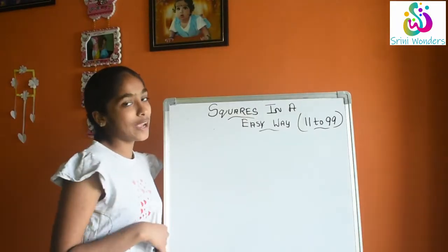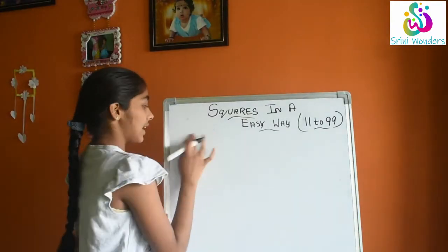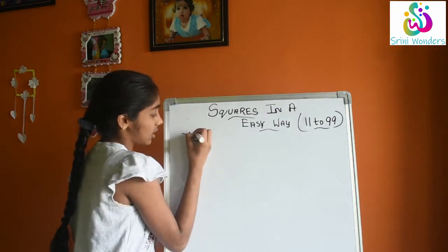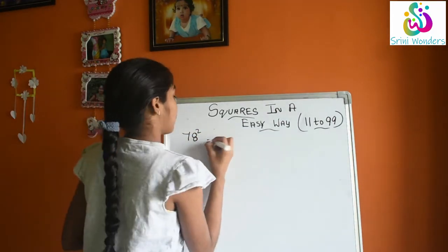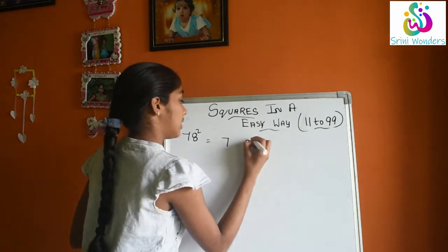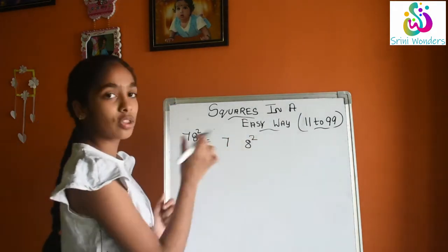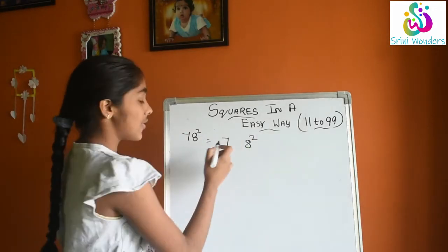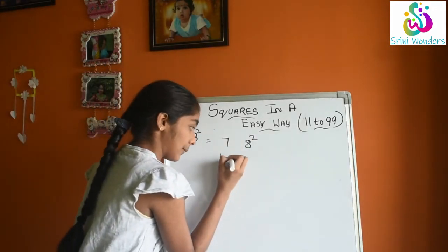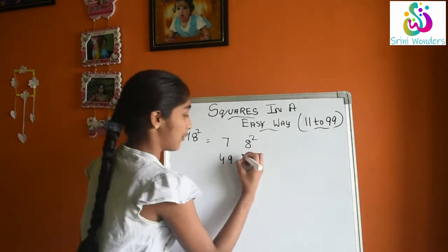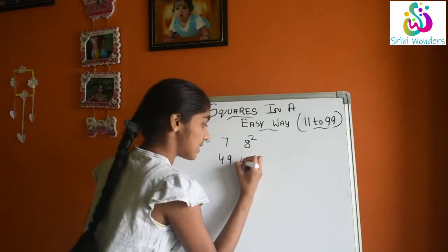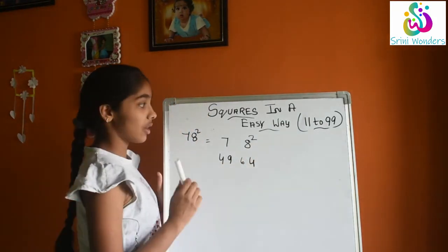Okay, so let us go to one more example. I will take 78 square. Now we will write down the squares of both the numbers, 7 and 8. 7 square is 49. 8 square is 64.